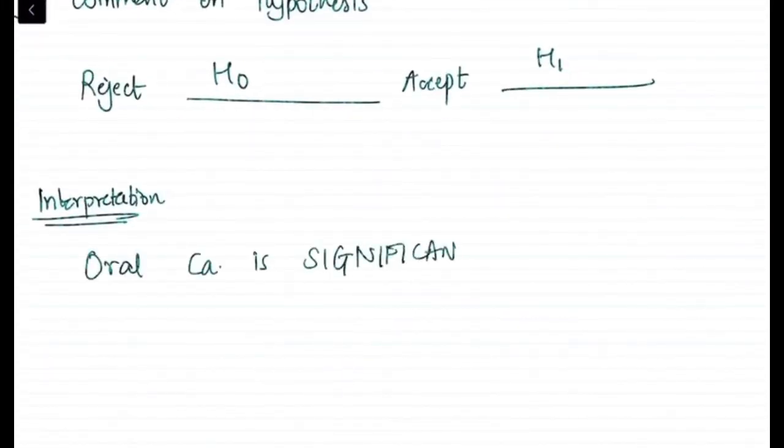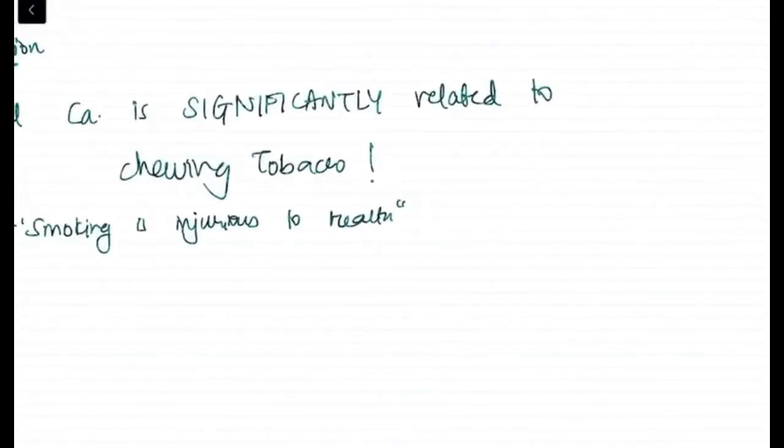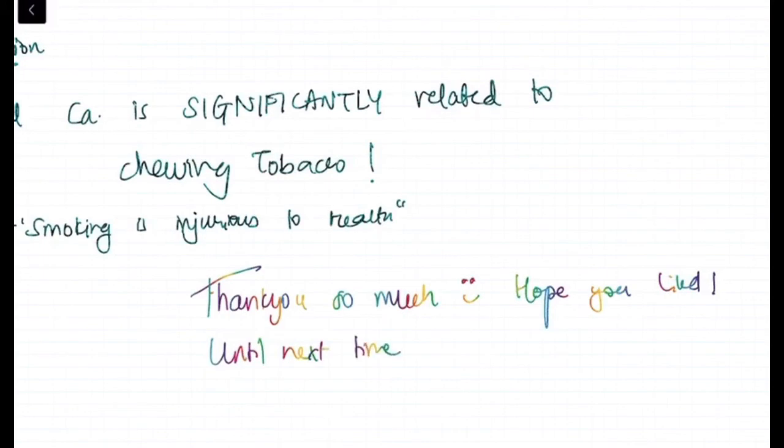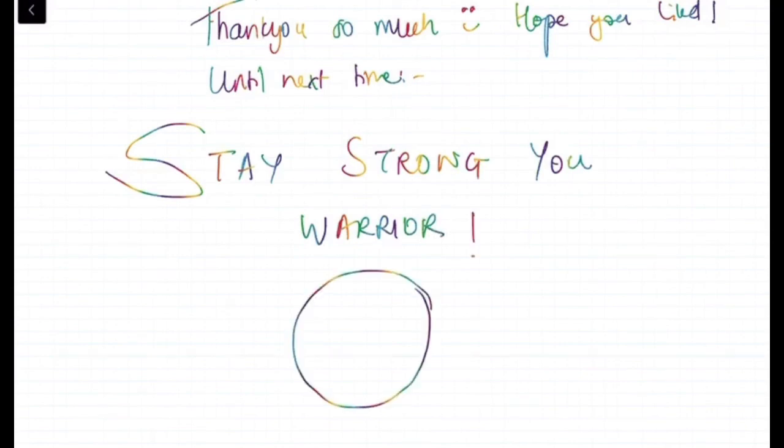Now we will compare chi-square calculator and chi-square tabulated, so we will reject it on the comparison. What is the interpretation? Oral cancer is significantly related to chewing tobacco. Smoking is injurious to health. Thank you so much for watching this video. Hope you understood this and you like this. Until next time, see you soon. You are supposed to stay strong and have faith in each and every cell of your body.